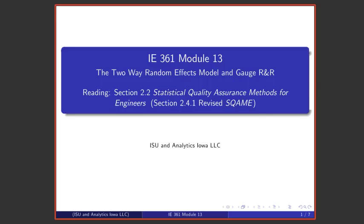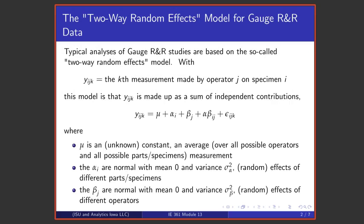Welcome to lecture 13 in this series on statistical quality assurance and statistical process improvement. We're discussing gauge R&R studies, standard gauge R&R studies that involve multiple parts, multiple operators, and multiple observations for each part-operator combination.